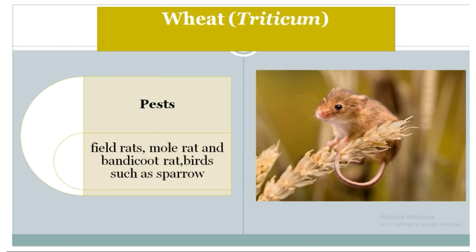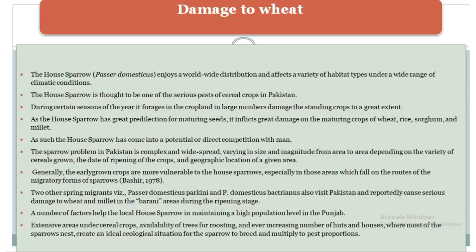The house sparrow, Passer domesticus, enjoys a worldwide distribution and affects a variety of habitat types under a wide range of climatic conditions. It is thought to be one of the most serious pests to cereal crops in Pakistan. During certain seasons of the year, it forages in cropland in large numbers, damaging standing crops to a great extent. As the house sparrow has a great predilection for maturing seeds, it inflicts great damage on maturing crops of wheat, rice, sorghum, and millet. The sparrow problem in Pakistan is complex and widespread, varying in size and magnitude from area to area depending on the variety of cereal grown, the date of ripening of crops, and geographic location. Generally, early-grown crops are more vulnerable to the house sparrow, especially in areas that fall on the route of migratory forms of sparrows.